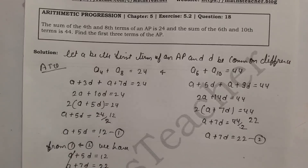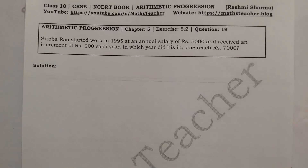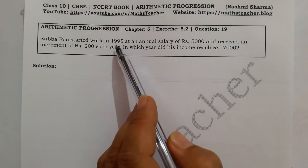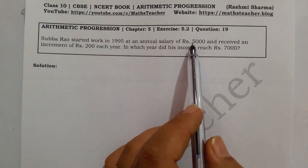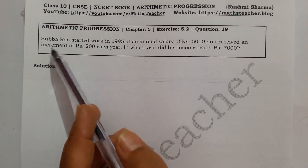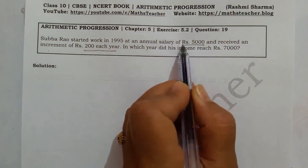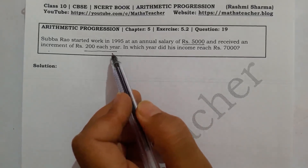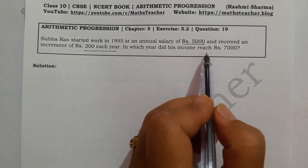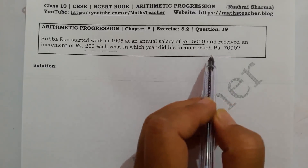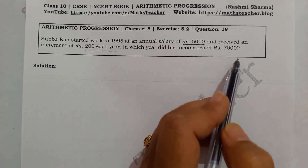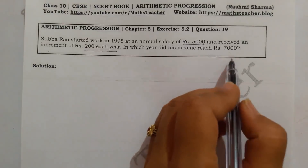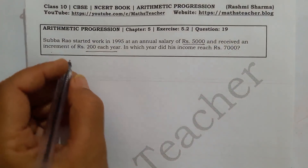That completes Question 18. Now let's solve Question Number 19. Subha Rao started work in 1995 at an annual salary of Rs. 5,000 and received an increase of Rs. 200 each year. In which year did his salary reach Rs. 7,000?